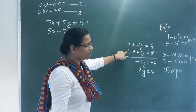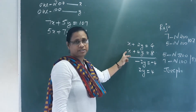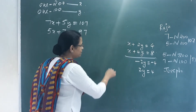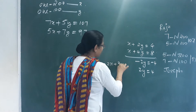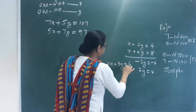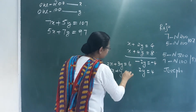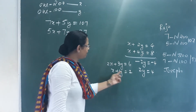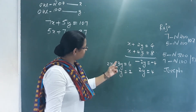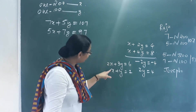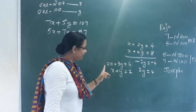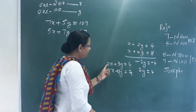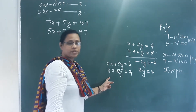When coefficients are equal, we can subtract directly and one variable becomes 0. Another example: 2x plus 3y equals 6, and x plus y equals 2. Here the coefficients are not equal, so we need to multiply one equation to make the coefficients equal before subtracting. We multiply to get 2y equals 4.